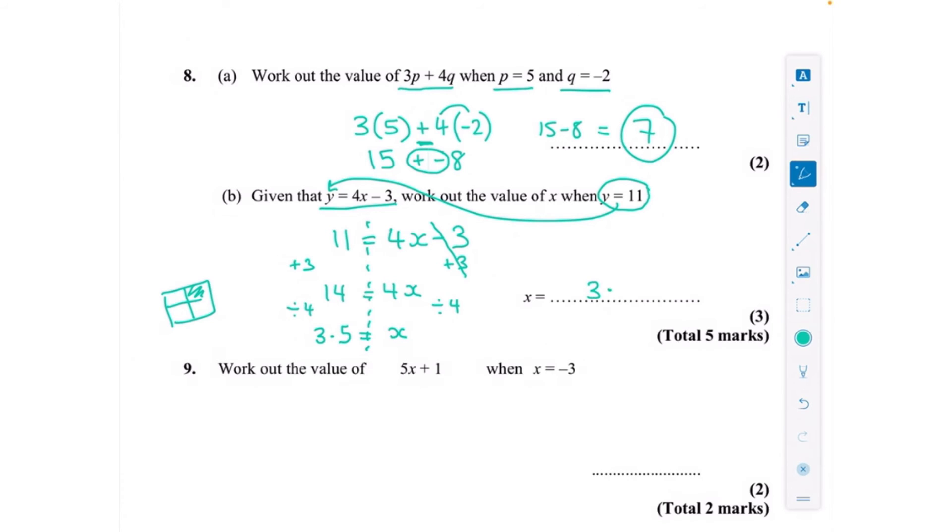And last but not least, work out the value of 5x add 1 when x is minus 3. So that's 5 lots of minus 3 add 1. 5 lots of minus 3 is minus 15 because again we're doing a positive multiplied by a negative, add 1.